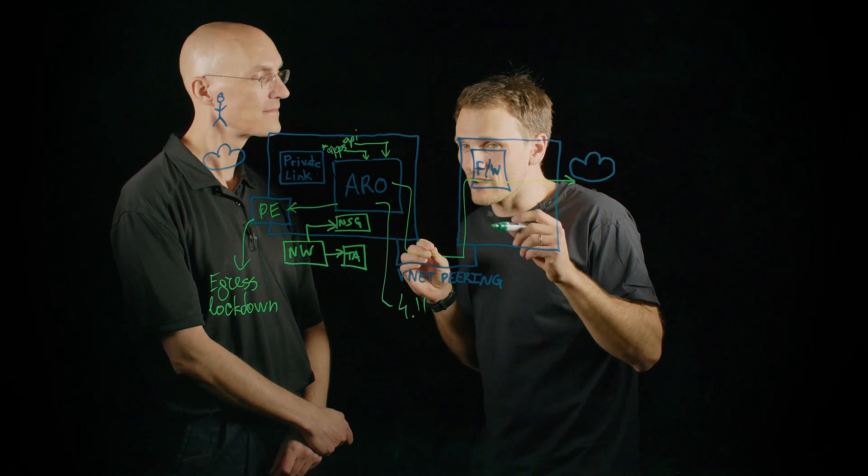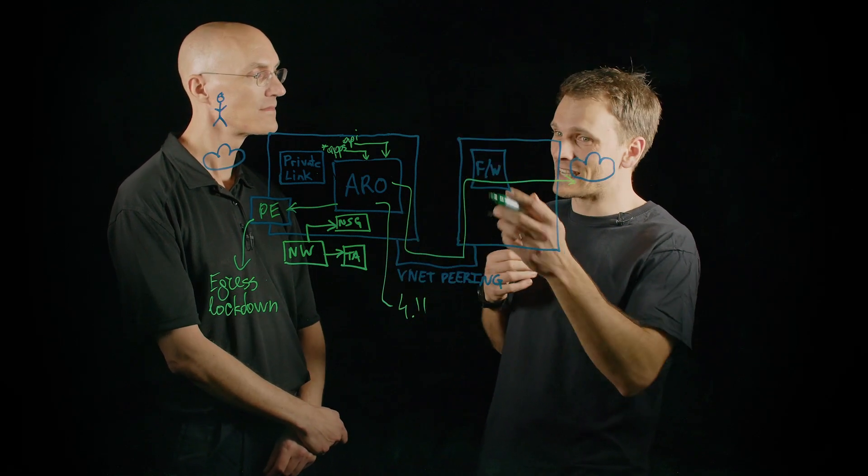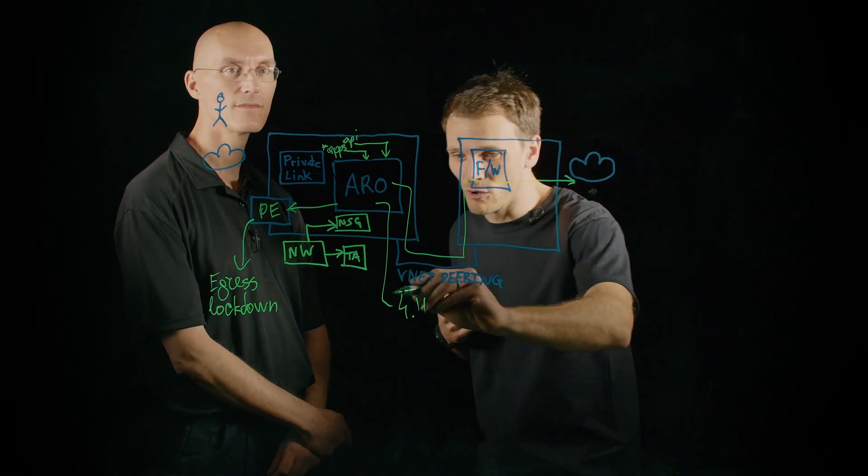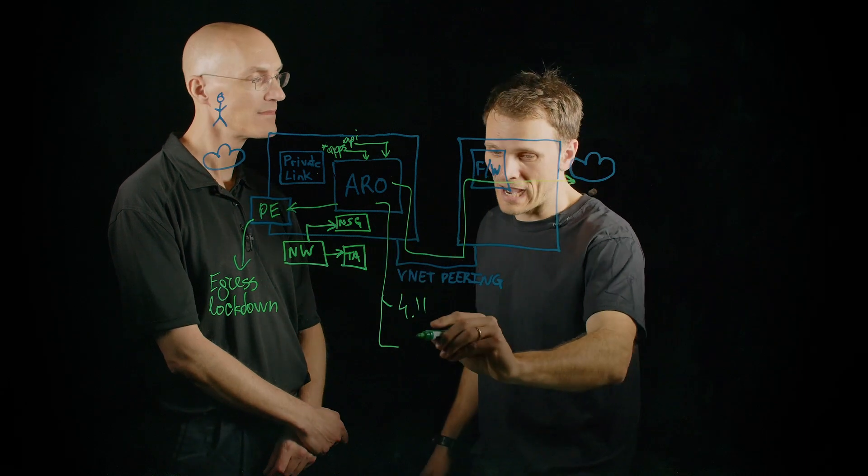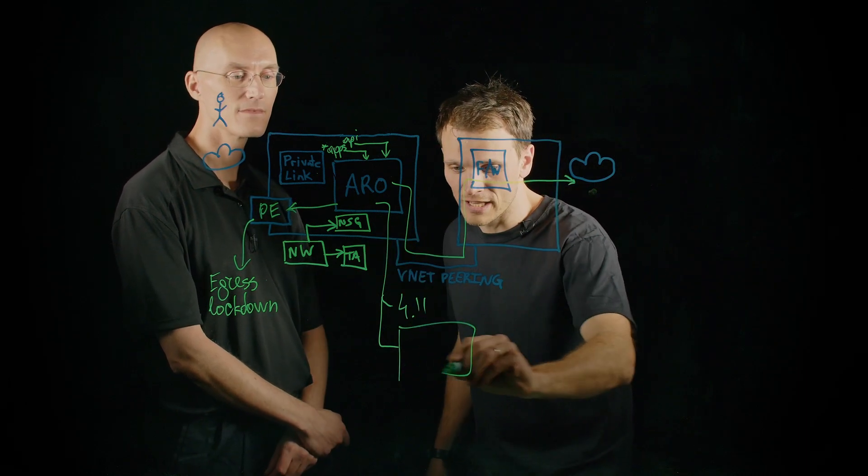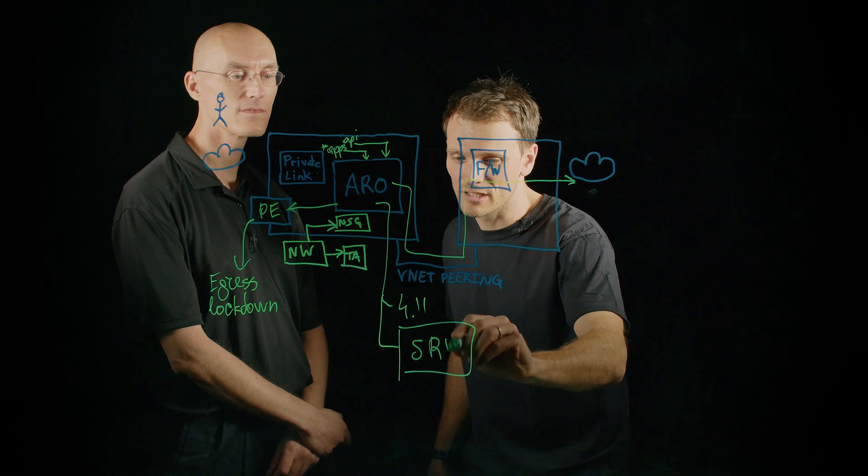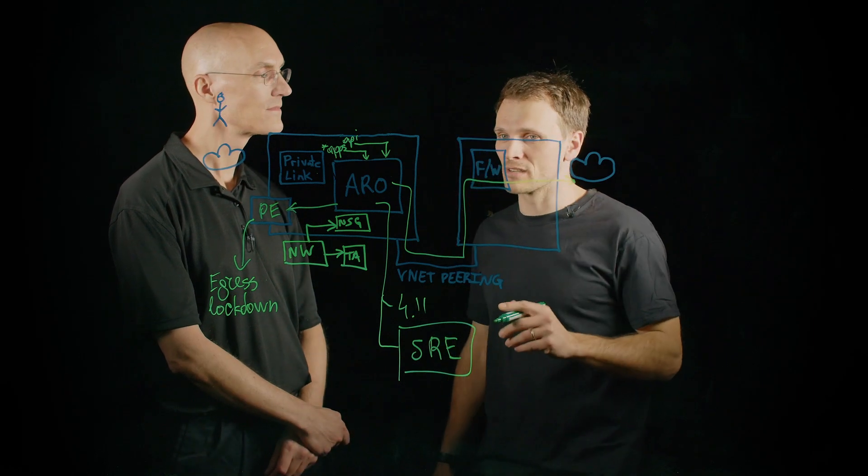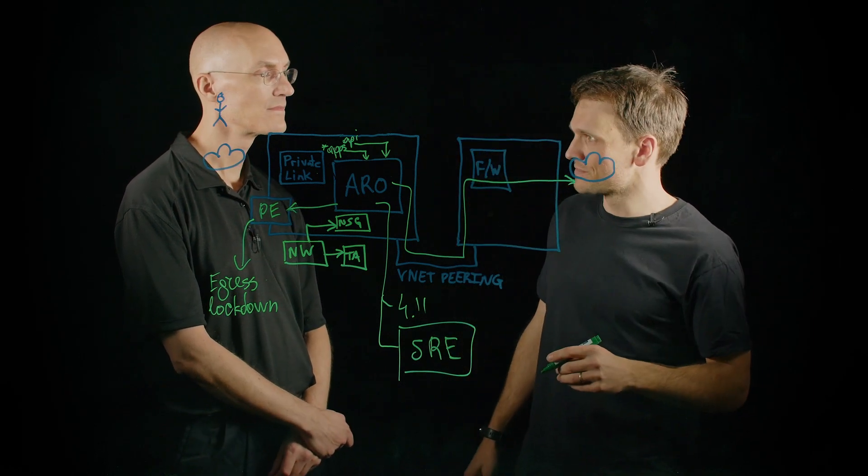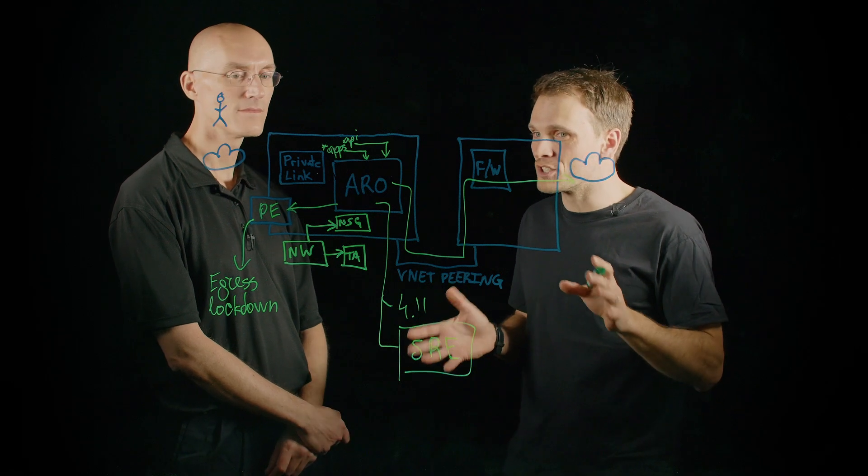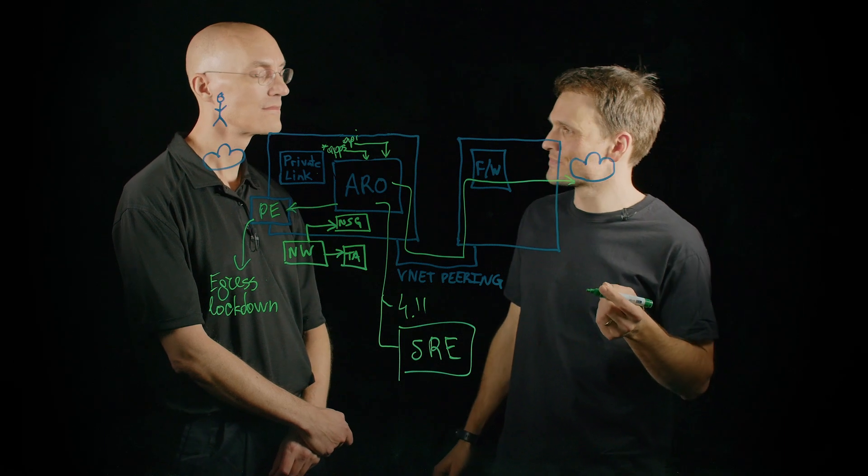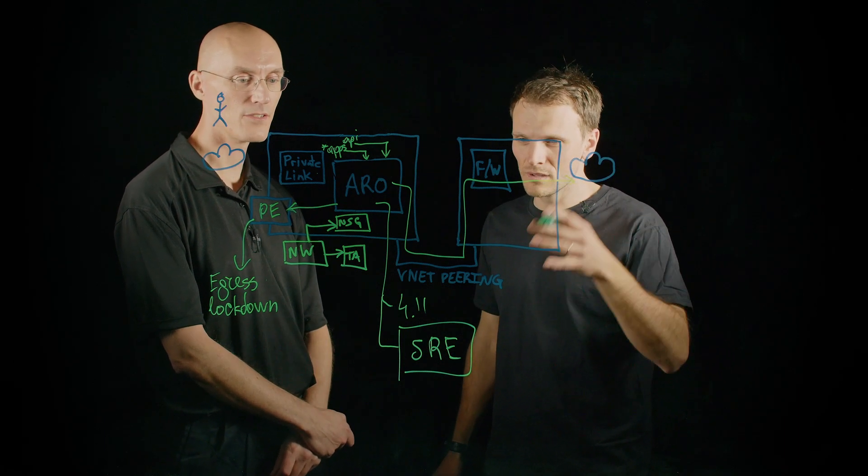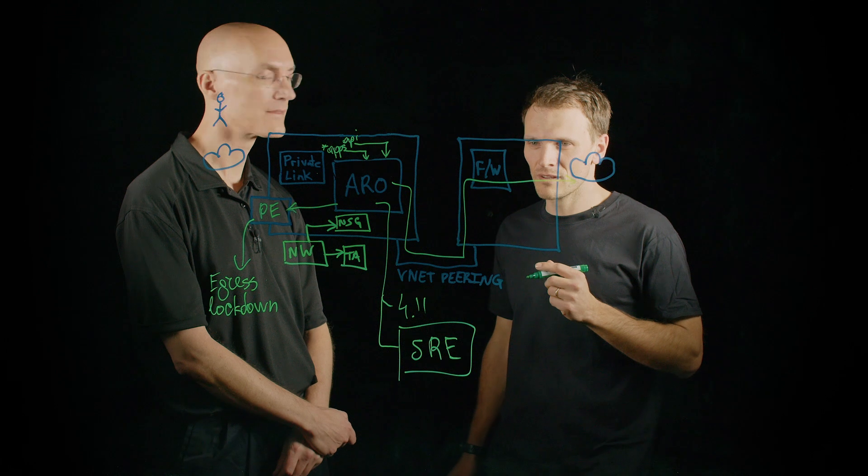What differentiates ARO from OpenShift is that this is a managed service. And on top of you having those updates rolling, you also have the Red Hat site reliability engineers monitoring your cluster and acting upon issues. Not just during updates, but that's a crucial part that customers usually ask about. That's very cool. It's definitely a differentiation for sure.